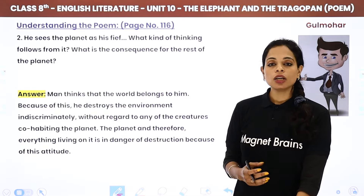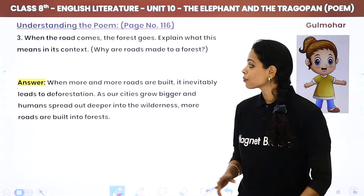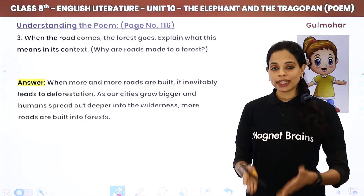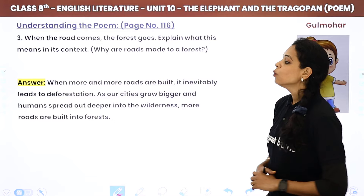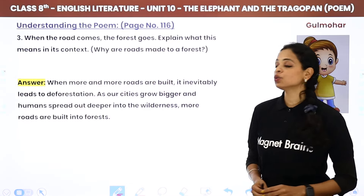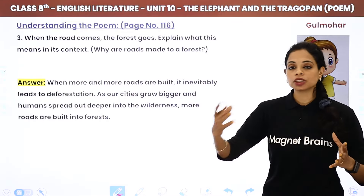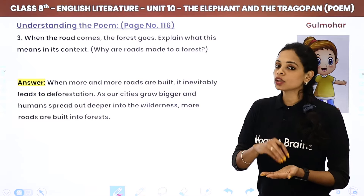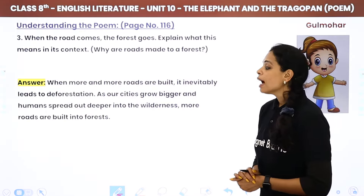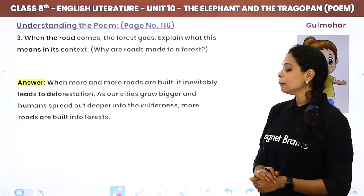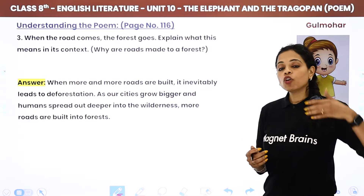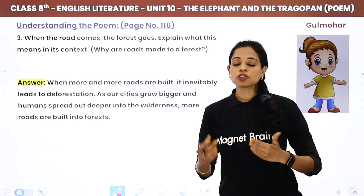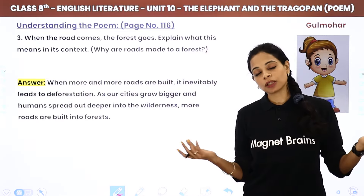'When the road comes, the forest goes.' Explain what this means in this context. This means that if you need to create roads, you obviously have to cut down the forest. When more and more roads are built, it inevitably leads to deforestation. As our cities grow bigger and humans spread deeper into the wilderness, more roads are built into forests — and for transportation, roads require destroying the forest.